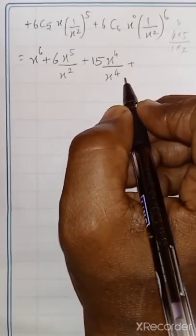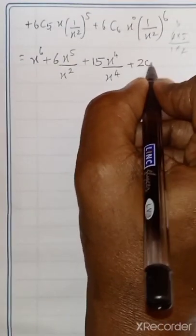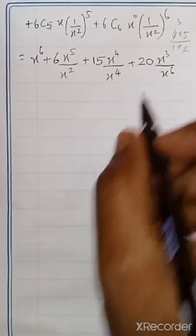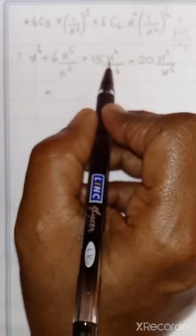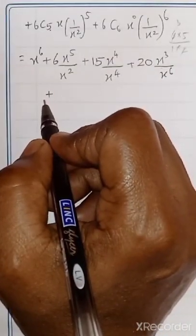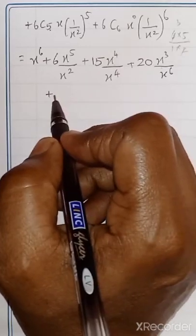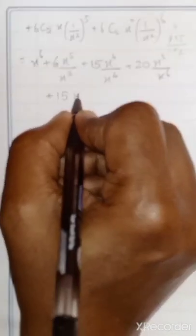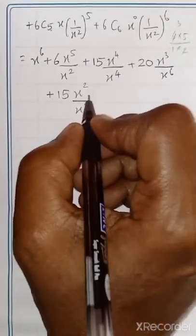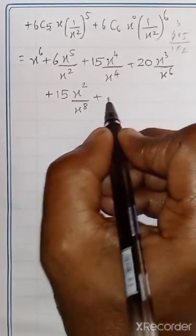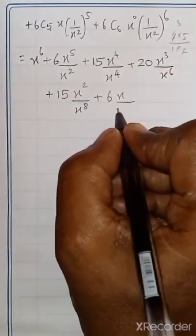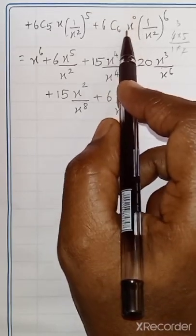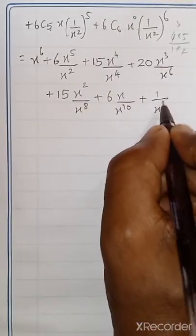6C4 equals 6 into 5 into 4 into 3 divided by 1 into 2 into 3 into 4 equals 15, giving 15 X power 2 by X power 8. And 6C5 equals 6, giving 6X by X power 10. And 6C6 equals 1, with X power 0 equals 1, so the last term is 1 by X power 12.